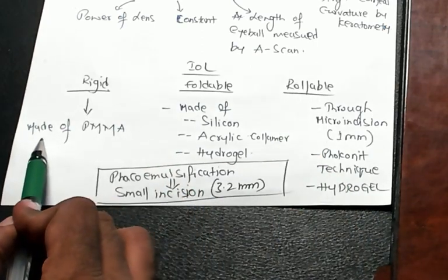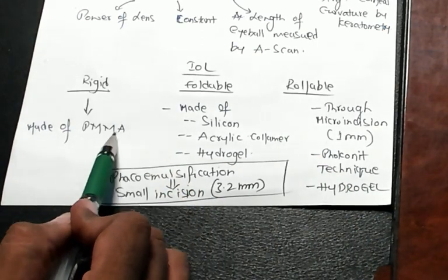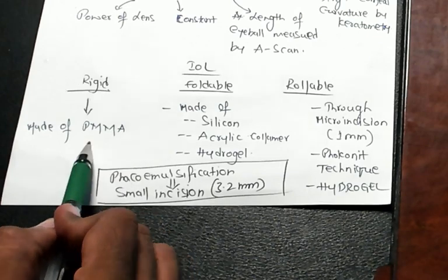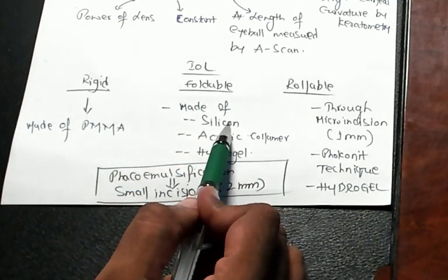Rigid IOL is made up of PMMA. And foldable IOL, either it is made up of silicon, acrylic, colamer, or hydrogel.